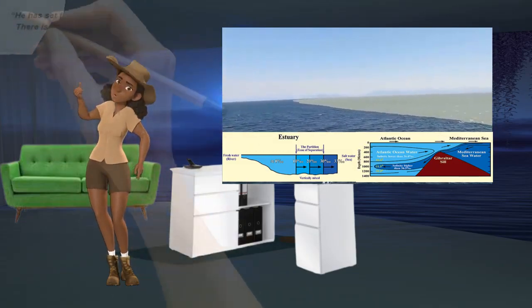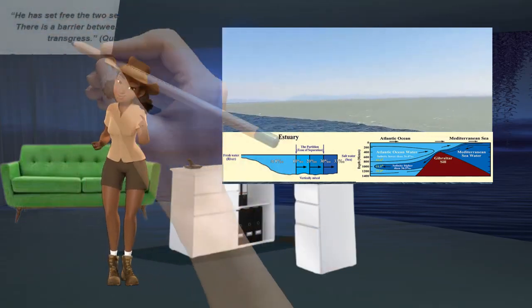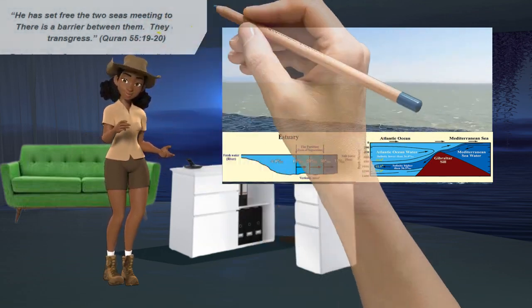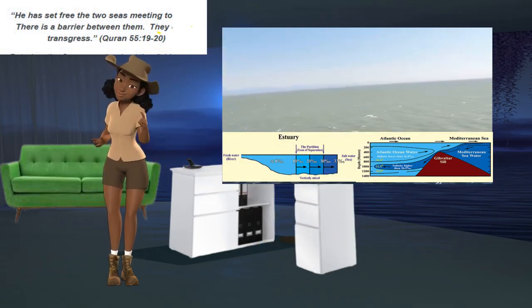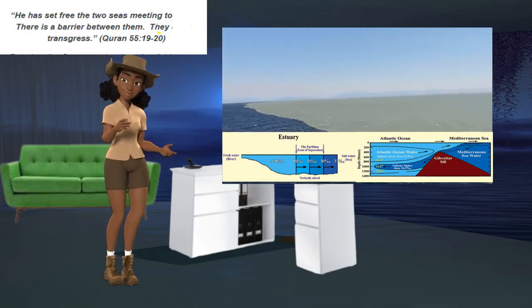The Holy Quran mentioned that there is a barrier between two seas that meet and that they do not transgress. God has said, He has set free the two seas meeting together. There is a barrier between them. They do not transgress. Quran 55, 19-20.